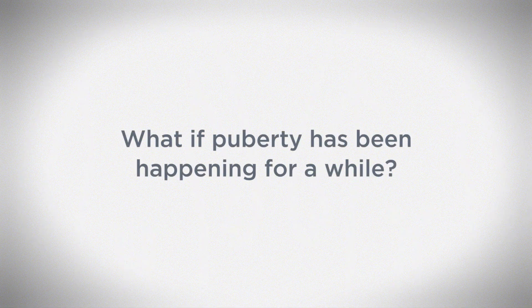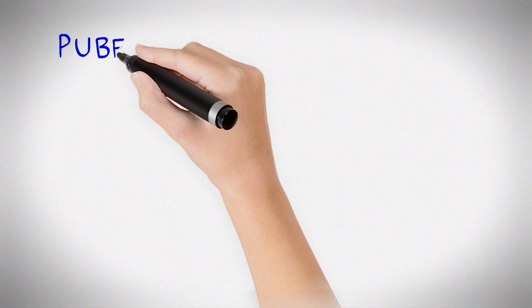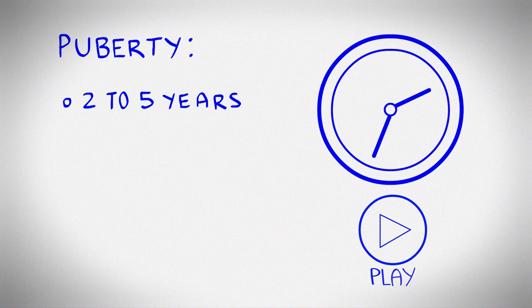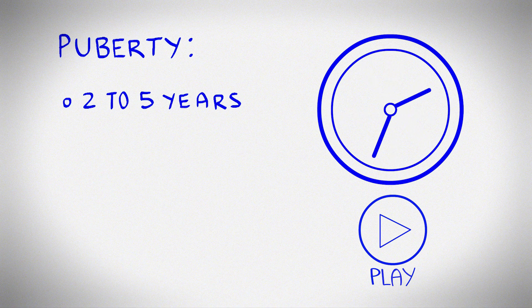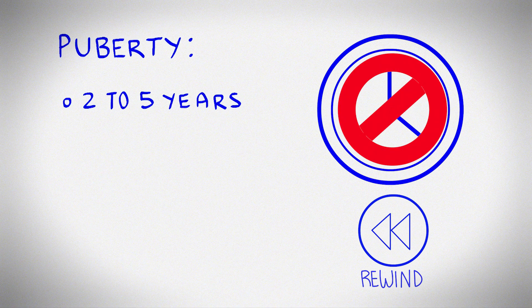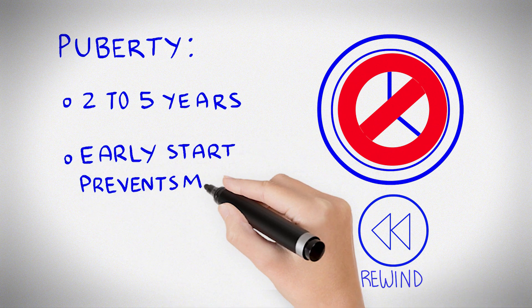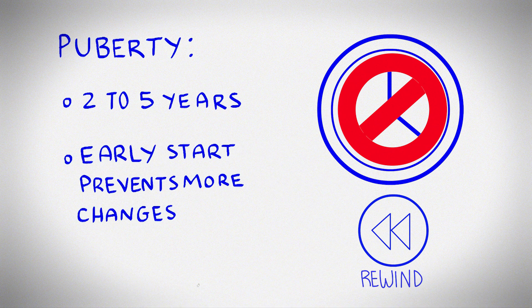What if puberty has been happening for a while? Puberty gradually changes the body over two to five years. If you start puberty blockers after puberty has been happening for a while, they can prevent any further changes, but they cannot reverse the changes that have already happened. The earlier in puberty that blockers are started, the more changes to the body they can prevent.